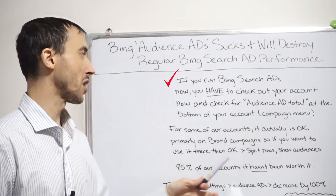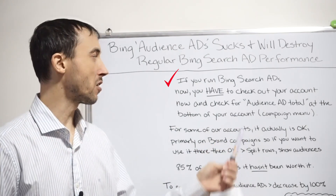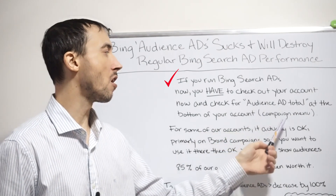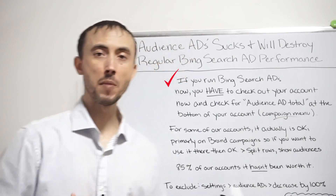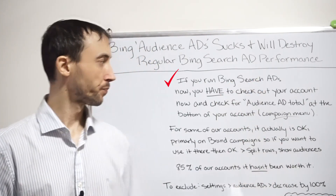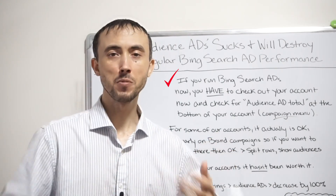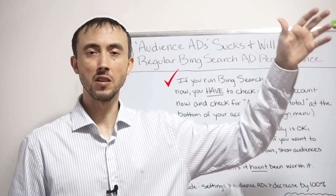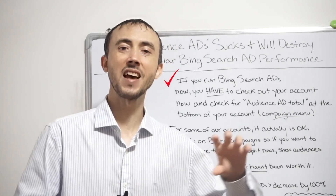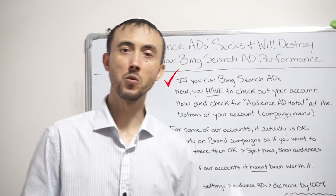If you run Bing search ads now, you have to check your ad account and look for something at the bottom of the basic screen — "Audience Ad Total" — which is inside your account at the bottom of your campaigns menu. If you log into your Bing account and don't know anything about audience ads yet, go to your account, click on all campaigns, go to the bottom of the screen, and look for "Audience Ad Total." Then adjust your columns to see conversions, so you can see how much you're spending on Bing's display network versus Bing.com search.